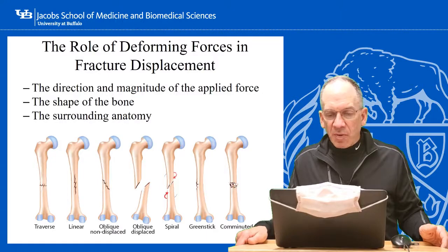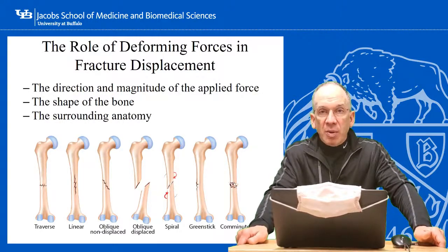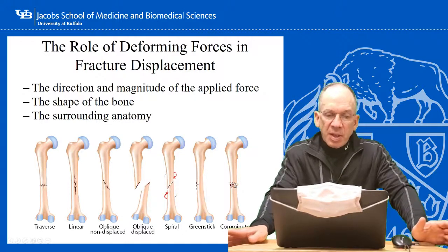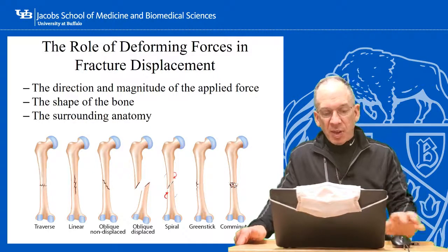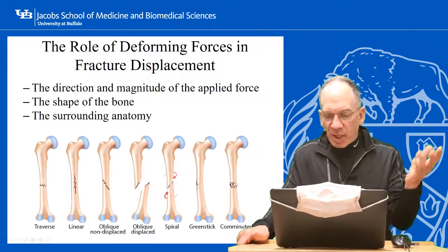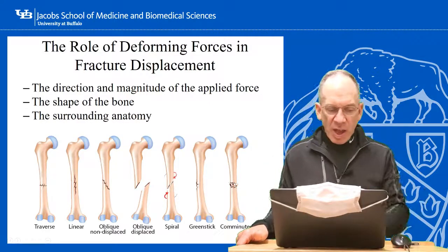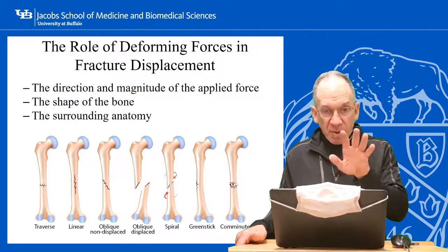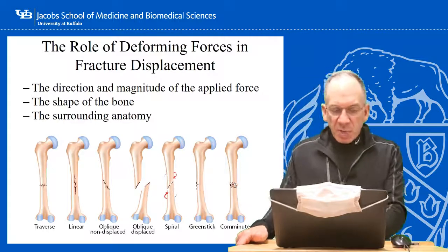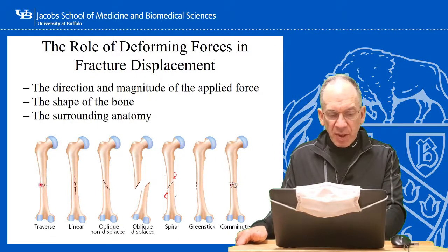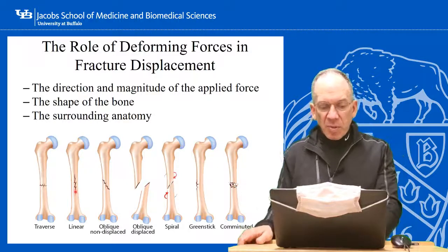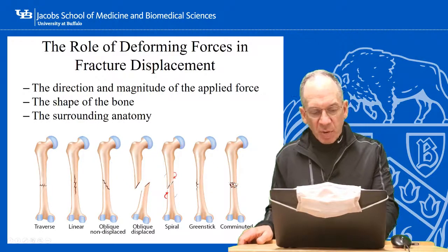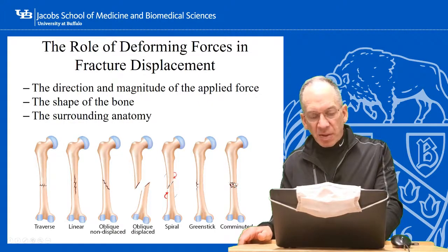The role of deforming forces in fracture displacement: you can tell a lot about a fracture by looking at an X-ray in terms of the mechanism. Factors that affect it include the direction of force and how rapidly it was applied, the shape of the bone, and the surrounding anatomy. A transverse fracture occurs from a force applied relatively perpendicular to the bone. A linear fracture results from a strong axial force — this is a very uncommon mode. Oblique fractures, displaced or non-displaced, mean the force was also applied at an oblique angle.